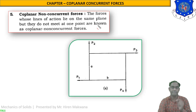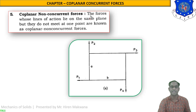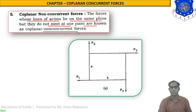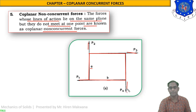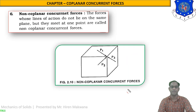Number five is co-planar non-concurrent forces. The plane is the same but the forces do not intersect at a common point. The forces whose lines of action lie on the same plane but do not meet at one point are known as co-planar non-concurrent forces. In the figure, a rectangular plane has forces P1, P2, P3, and P4 acting at its four corners — they do not intersect at a common point.